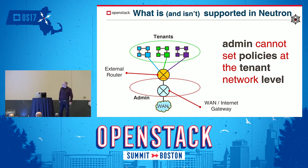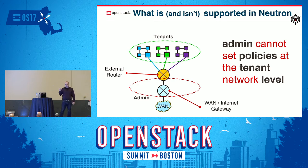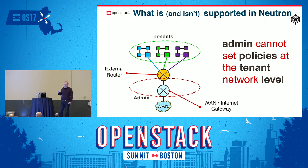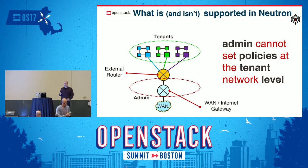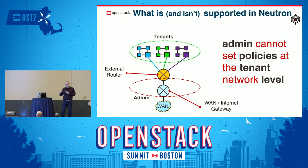If you look at this graphic, you can see on the upper side the tenants. The projects can see the virtual networks they create, and they can also see the edge, the external router that is provided to them by the admin. The admin, on the other side, can define the router. They see the WAN link or the connection to the WAN, but they do not see the virtual networks. They don't have the ability to see or to define any policies on the virtual network level.